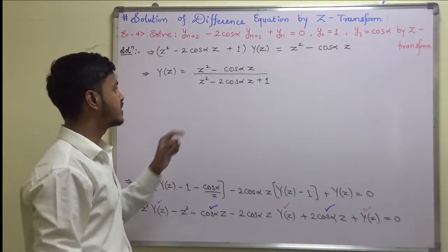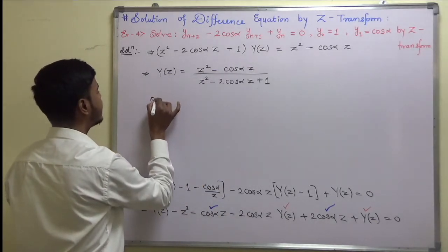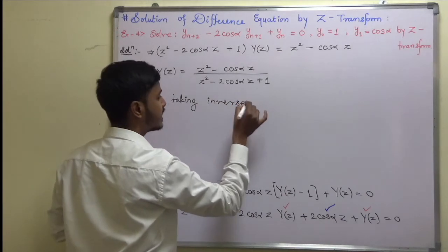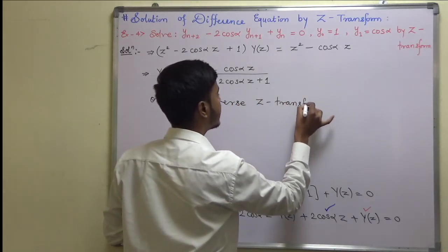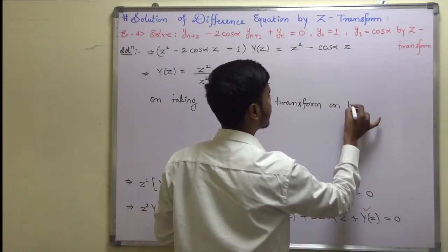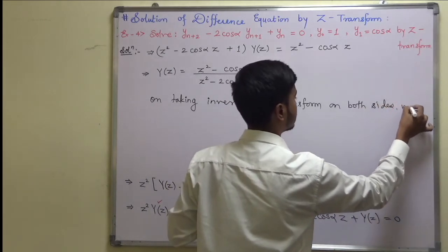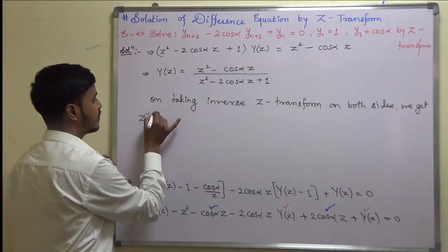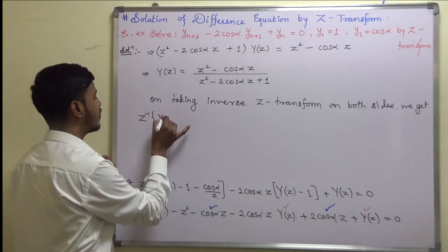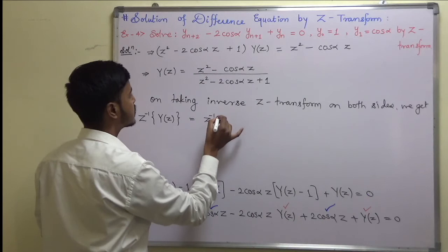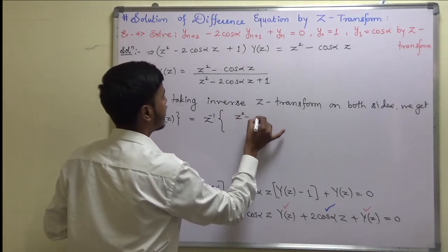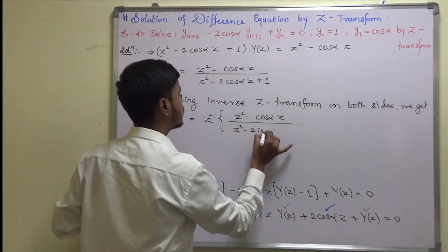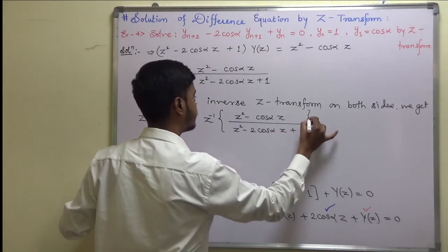This is the standard formula. So you can directly write, on taking inverse Z-transform on both sides, inverse Z-transform on both sides. What I will be getting is z^(-1)[y(z)] = z^(-1)[(z^2 - cos(alpha)z)/(z^2 - 2cos(alpha)z + 1)].